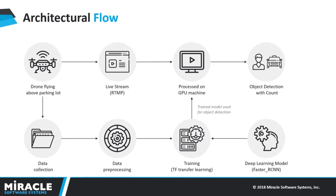The same drone is flown above the target parking facility with live video streaming enabled over RTMP network. This live stream is received by a GPU-powered Windows machine pre-configured with RTMP and Nginx modules. The live stream is fed into the custom-trained TensorFlow object detection model, which outputs detected objects by drawing a box around every vehicle and displaying the count of each object. We also added an additional class — person — so our model is trained and capable of detecting people as well.